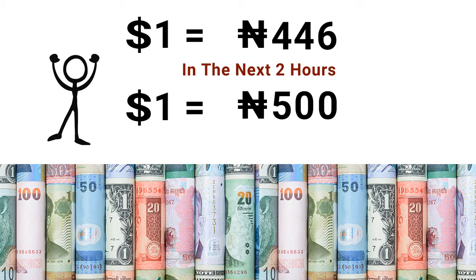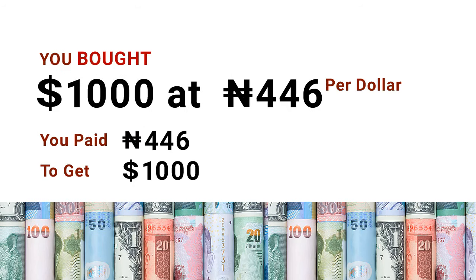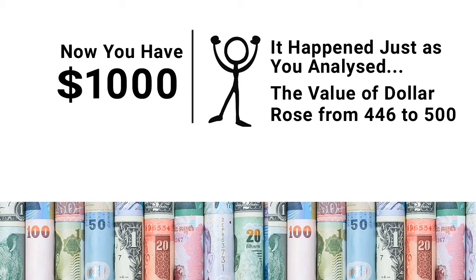So you went to the forex market — let's use a bureau de change as an example. You went to the bureau de change and bought one thousand dollars at 446 naira each. That means you gave the bureau de change 446,000 naira and they gave you one thousand dollars. Now you have one thousand dollars in your hand. After two hours, just as you predicted, the dollar rose to 500 naira per dollar.